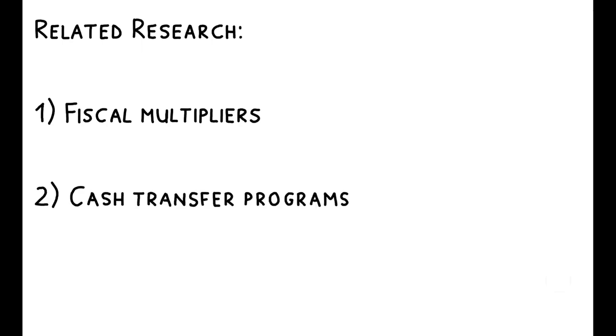As always, you can check out the full paper and its references to other related research. These include a macroeconomics literature on multipliers, a development literature studying the effects of cash transfer programs, and finally, a broader debate on the role of randomized controlled trials in economics and the kinds of questions they can help us answer.